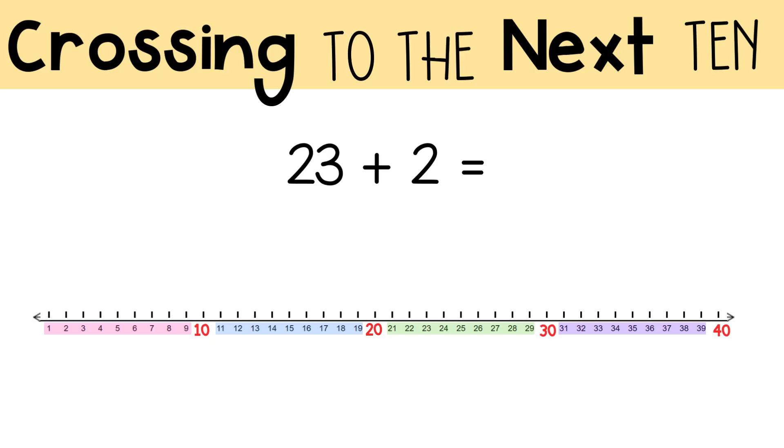Let's say you're adding 23 plus 2. You'll start at 23. The next 10 is 30. When you add 2 to 23, what do you get? 23 plus 2 equals 25. You didn't cross 30, so you didn't cross the next 10. You're still in the 20s. So you don't always cross a ten when adding.